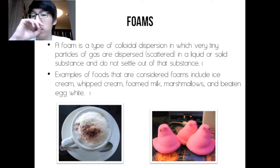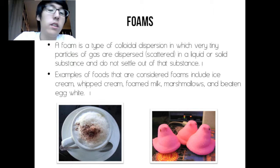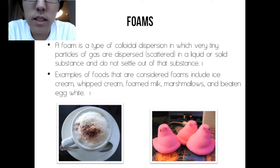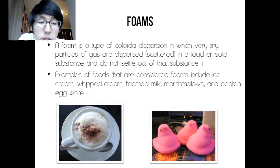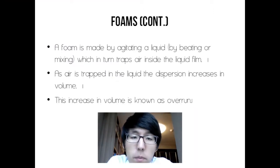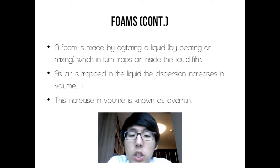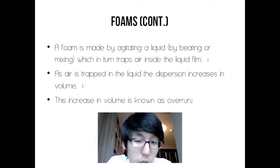Foams. A foam is a type of colloidal dispersion in which very tiny particles of gas are dispersed or scattered in a liquid or solid substance and do not settle out of that substance. Examples include ice cream, whipped cream, foam, marshmallows, and beaten egg whites. Foam is made by agitating a liquid by beating or mixing, which in turn traps air inside the liquid film. As air is trapped in the liquid, the dispersion increases in volume. This increase in volume is known as overrun.